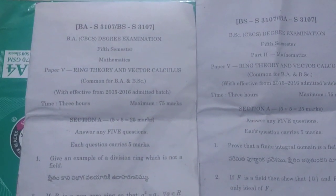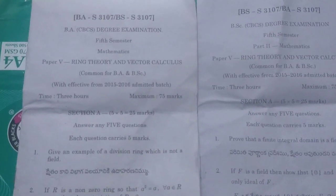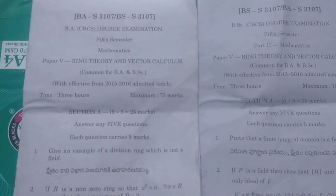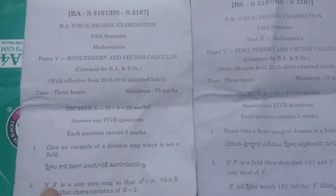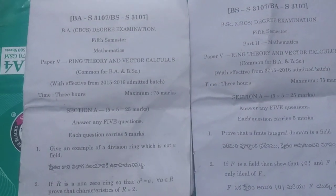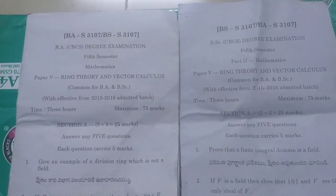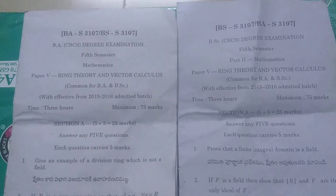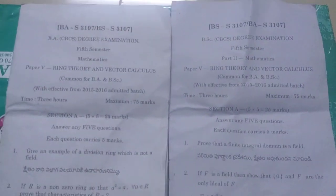Let's talk about the topic: 5th semester Mathematics Paper 5 — Ring Theory and Vector Characters paper. This is the 2018 paper. This is the 2019 paper, compared to BSE degree exam 5th semester Paper 5, 2019 paper.